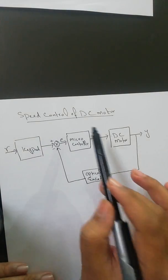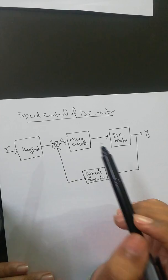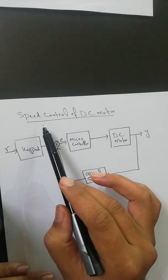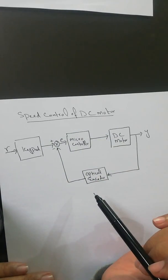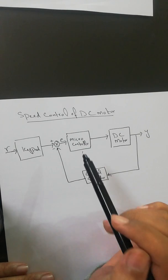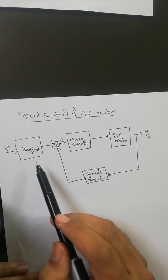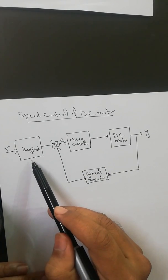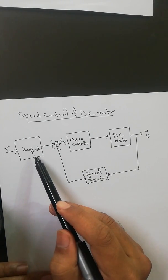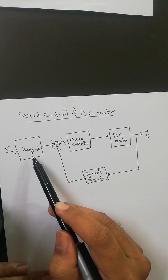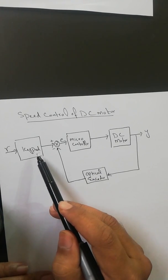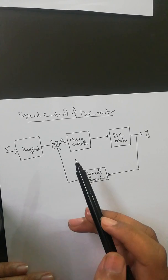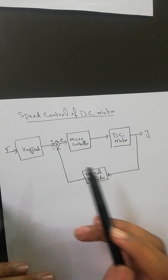To further explain the closed loop control system, take the example of a speed controller for a DC motor. If you want to control the speed of a DC motor, the following closed loop system will be used. The keypad is used as input, from which you will give the command — the required or desired speed that you want for the motor.